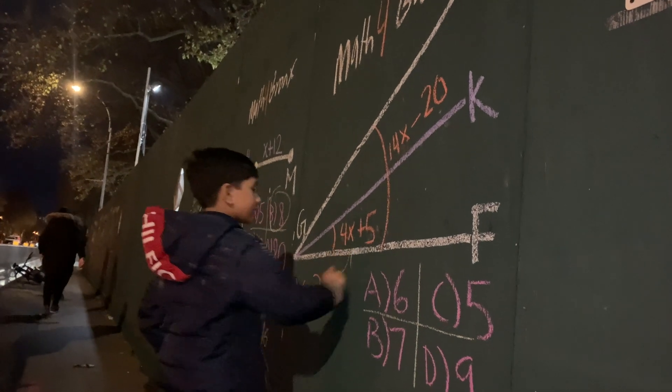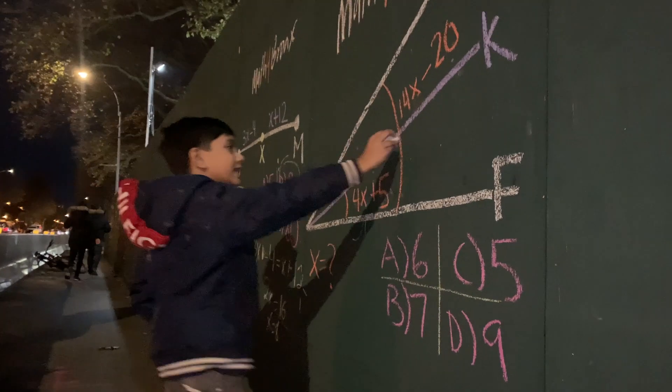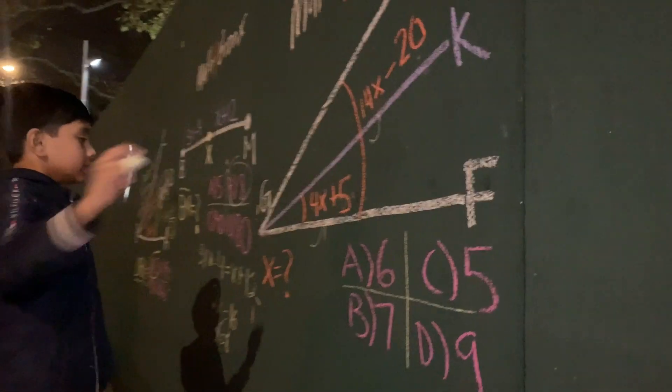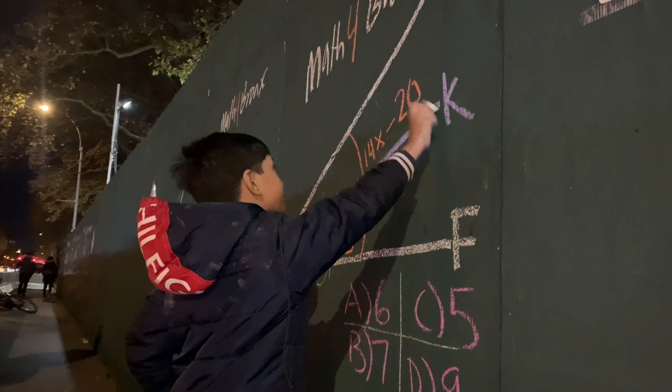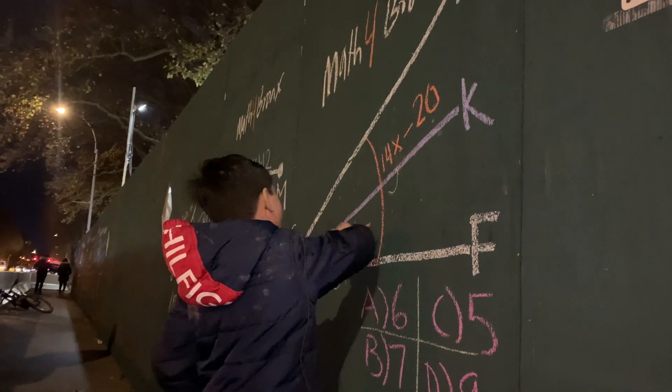So, 4x plus 5, and then 14x minus 20. So we have two angles, and this GK bisects the angle G.